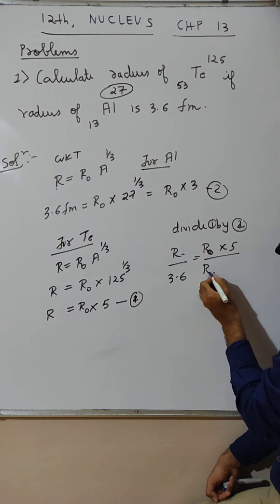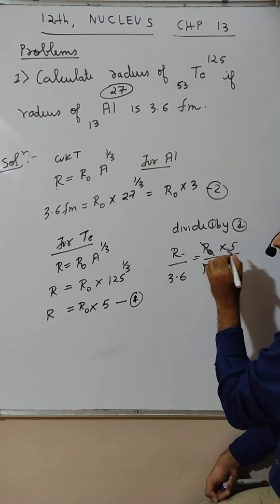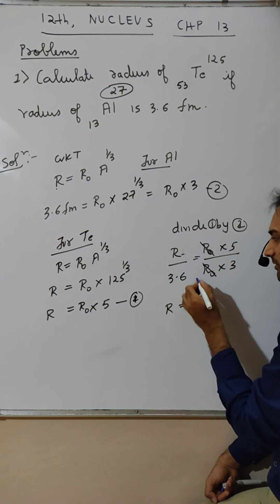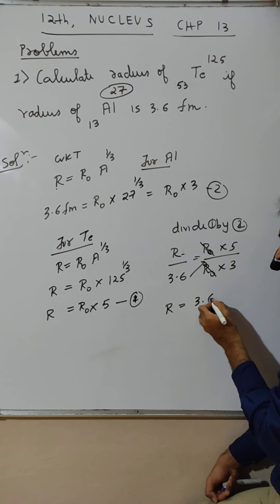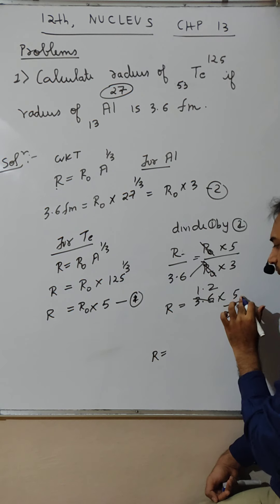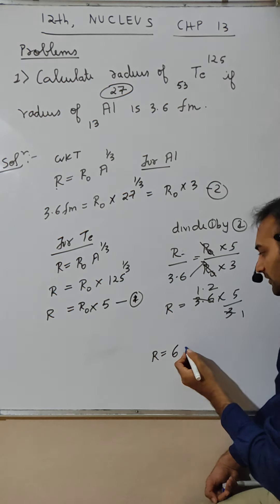R₀, R₀ into 3. R₀, R₀ cancel out. So R is equal to 3.6 times 5 by 3. 3 into 1 is 3, 1.2 times 5.